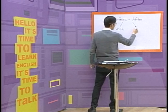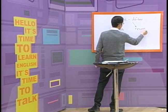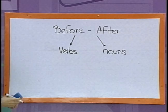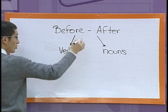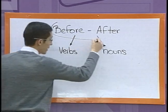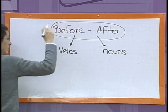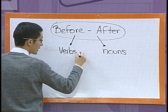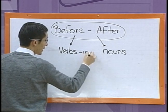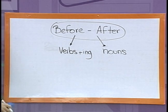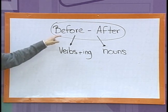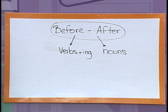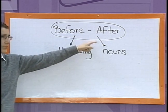No se olviden que estas son preposiciones. Y después de una preposición, el verbo tiene que ir con -ing. Vamos a ver algunos ejemplos con estas dos palabritas para que ustedes puedan ver cómo ordenar las actividades que hacemos antes de y después de.